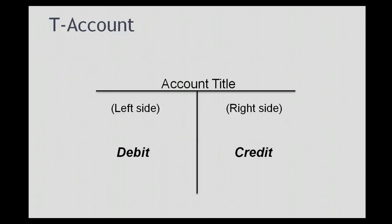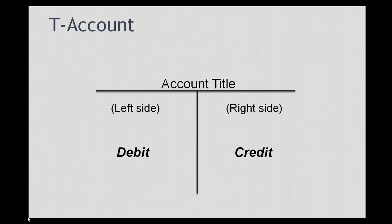In accounting, we use the T-account to visually represent what an account looks like. Whenever you see these T-accounts, that's all the information contained in an account. The T-account looks like this: on the top you will get the title of the account. So if this is a cash account, the title will have cash. If it is a common stock account, the title will say common stock.